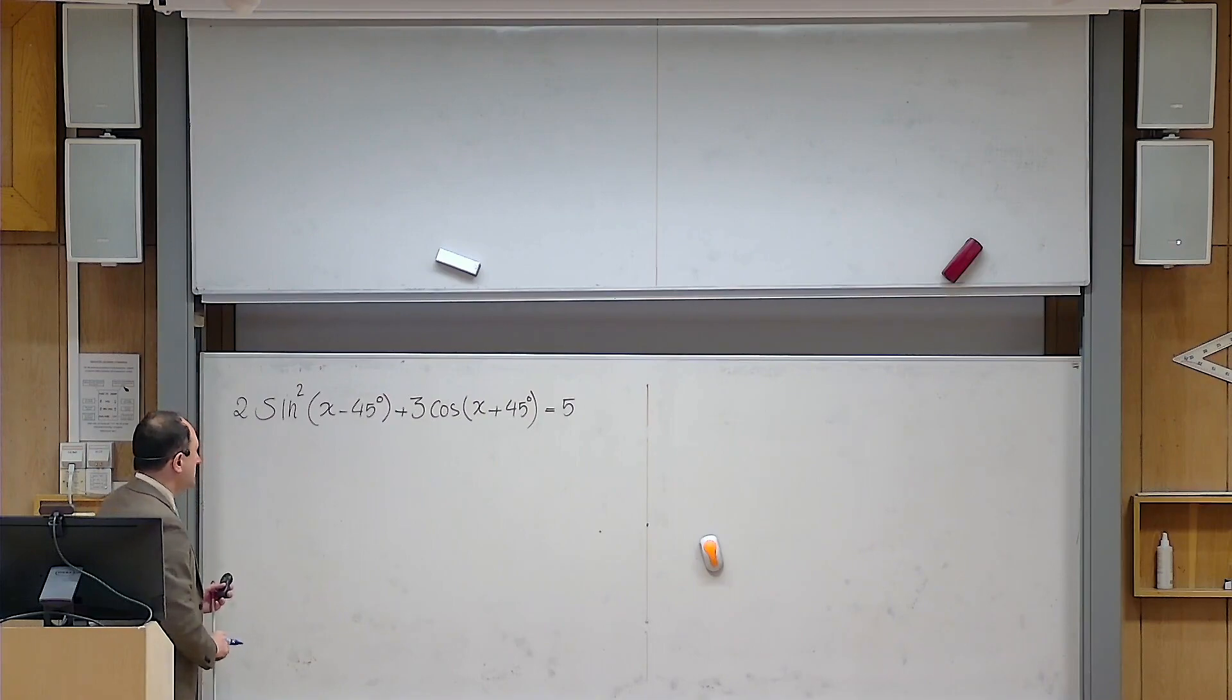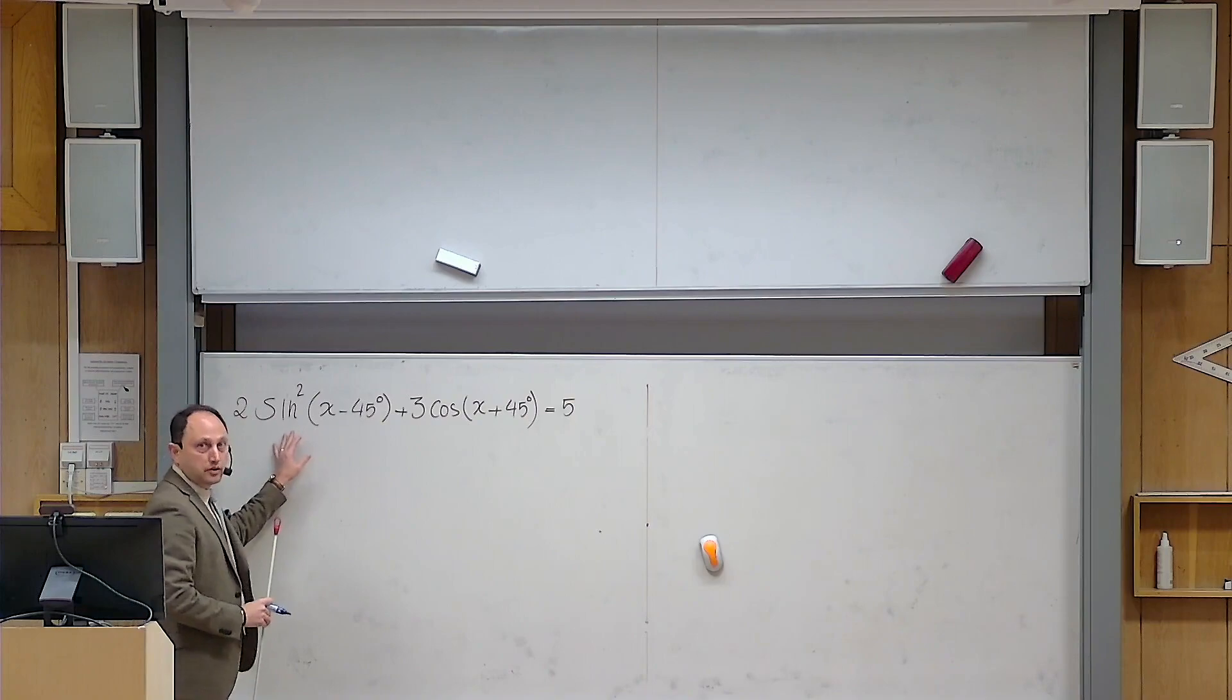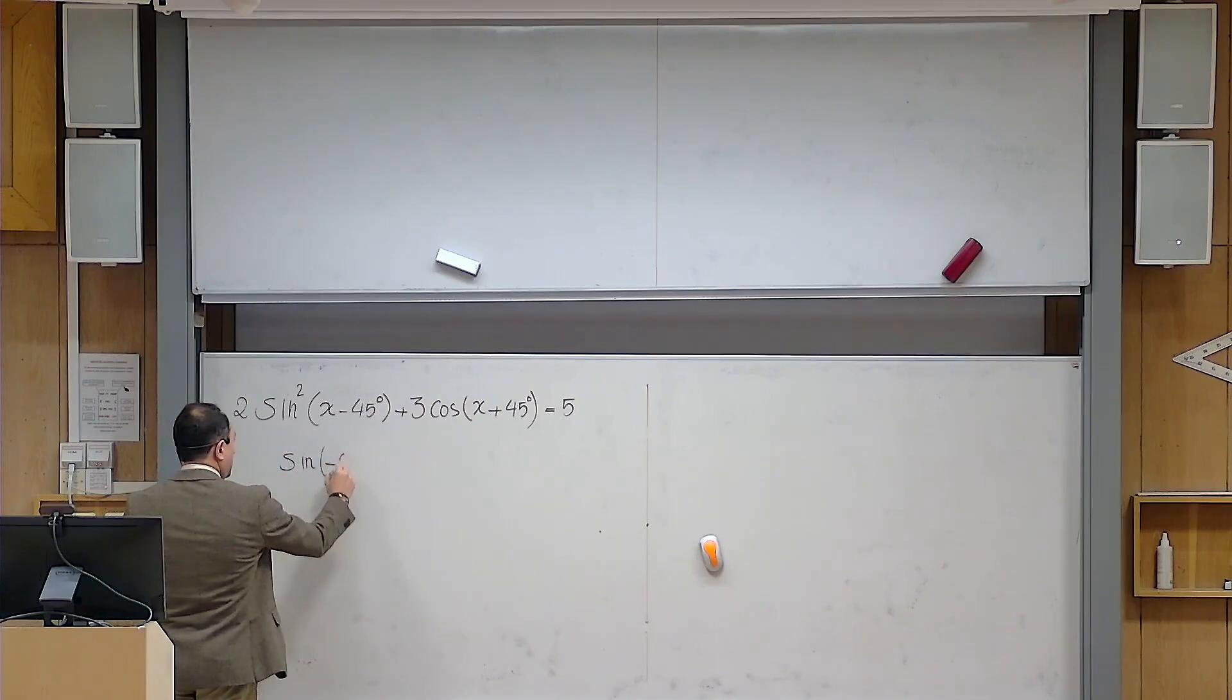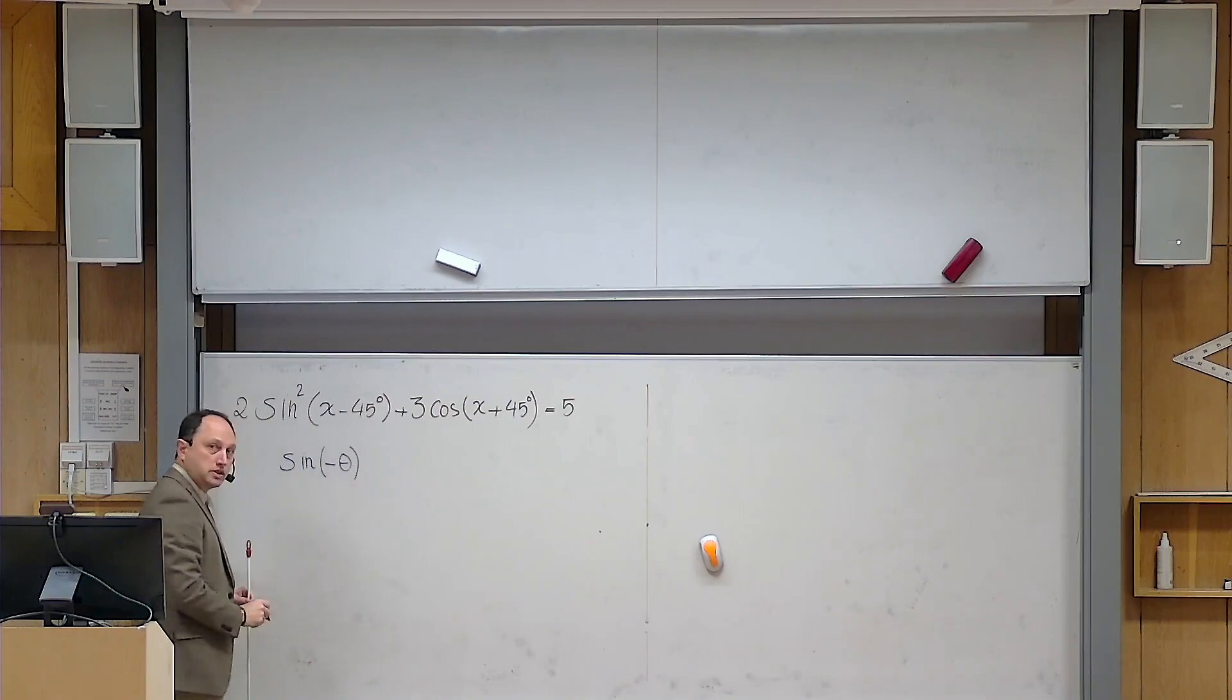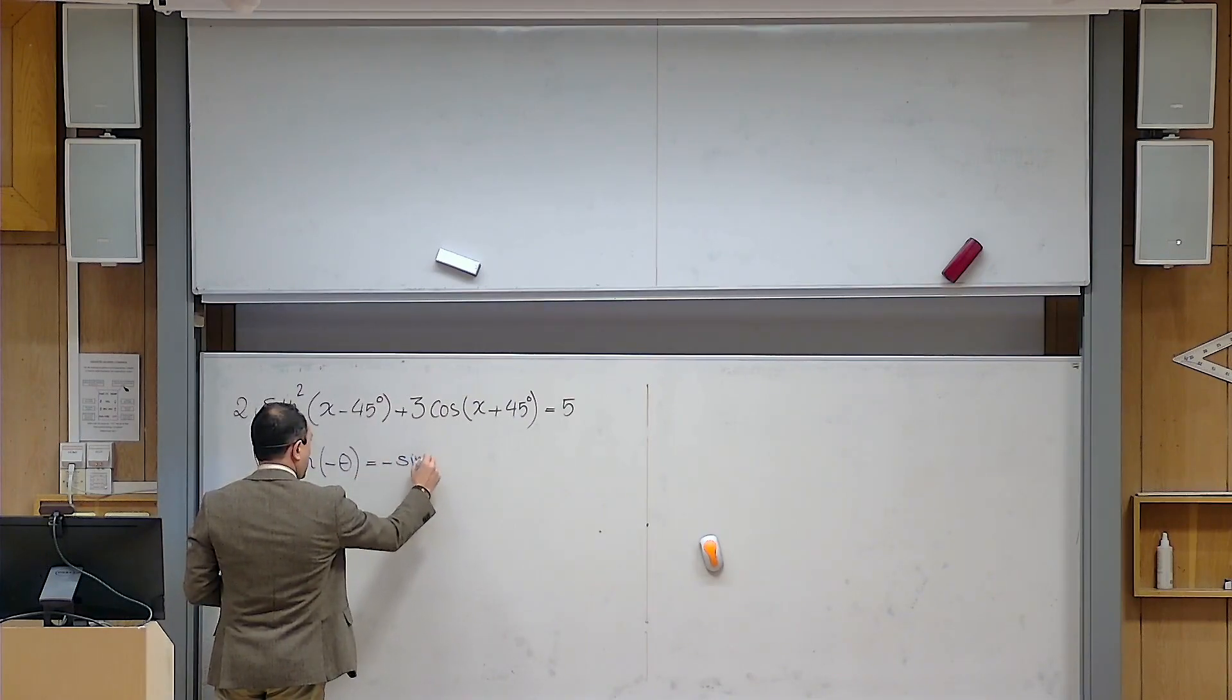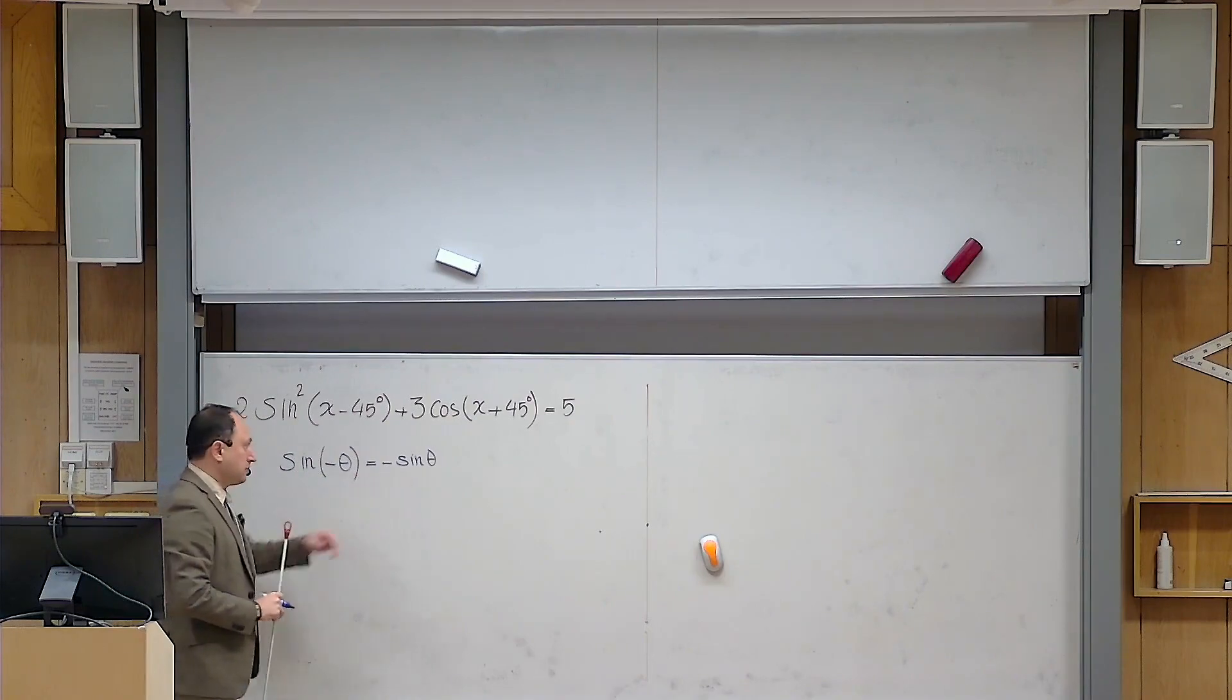Okay, so this is the problem. I have written it here on the board, and we are supposed to solve it. The point is that you need to observe two things here in this problem. Let me remind you about some formulas. You know that from your studies in trigonometry, sine of the negative of an angle is equal to negative of sine of that angle.